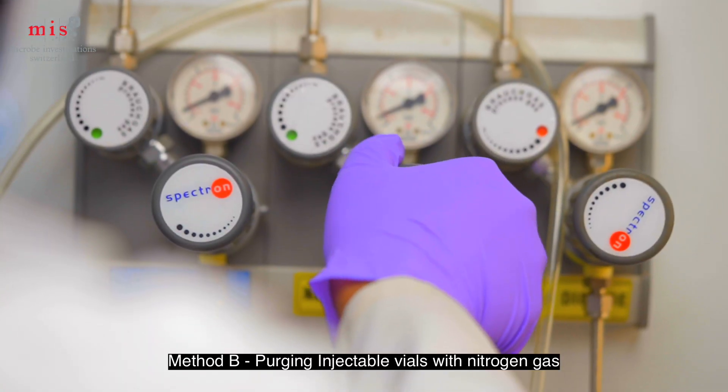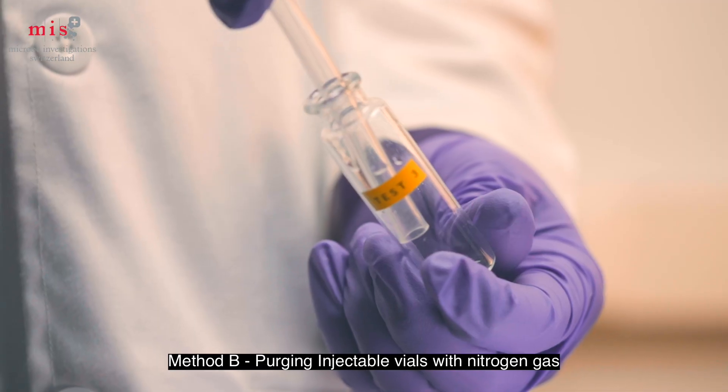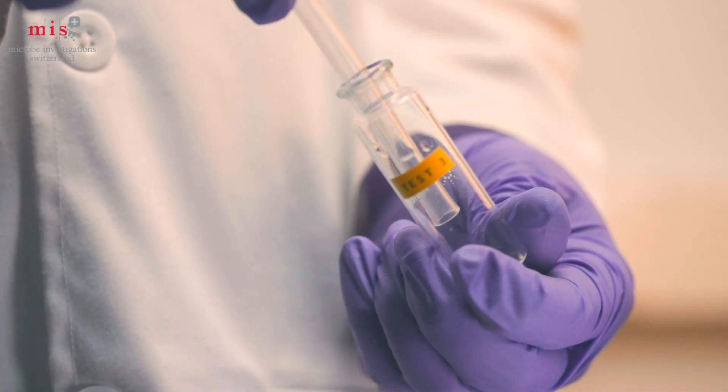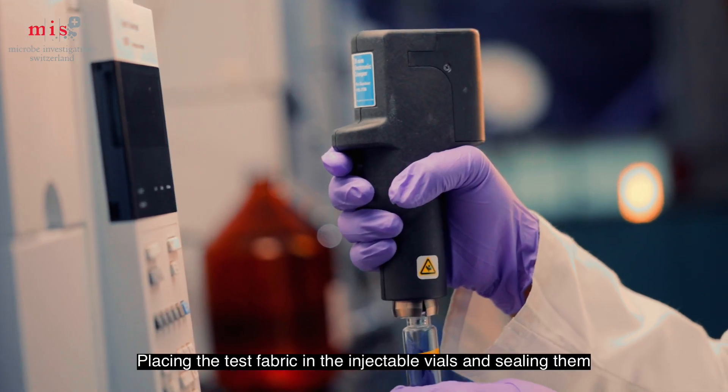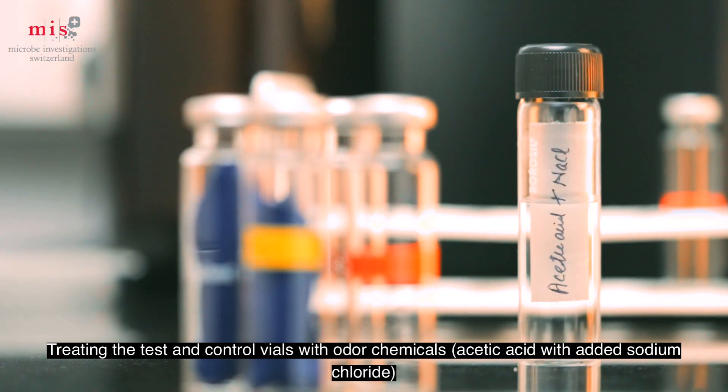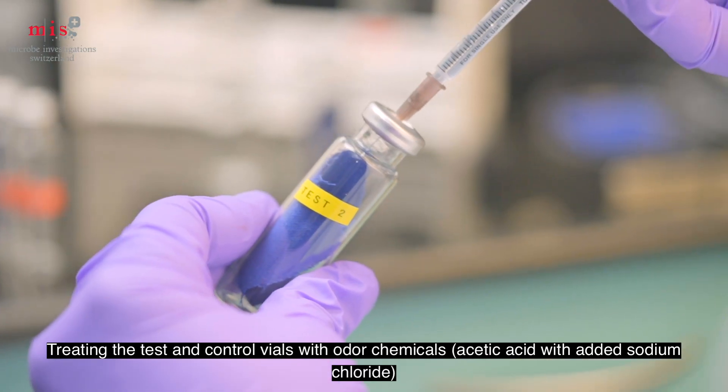Like Method A, Method B starts by purging the air of the injectable vials by blowing nitrogen gas. Test specimens are placed into an injectable vial which is then clamped. The next step involves injecting the odor chemicals into the test and control vials.